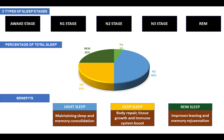The third stage is N2, which is a deeper form of light sleep and accounts for 45 percent of total sleep. EEG recordings show it is characterized by sleep spindles, K complexes, or both. Sleep spindles are powerful neuronal firings which, according to studies, help in memory consolidation. K complexes are long delta waves which play an important role in maintaining sleep and memory consolidation.